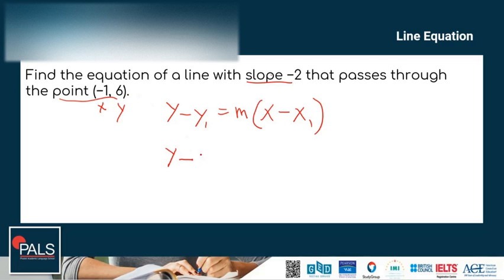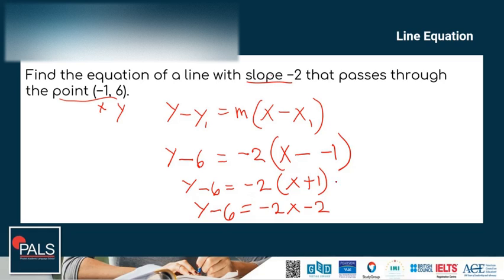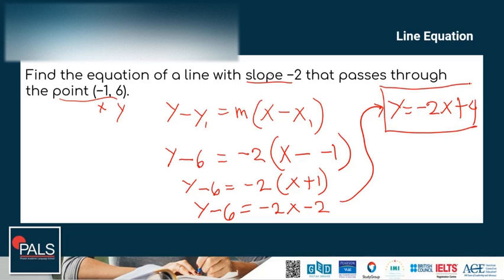Let's plug in the values: y minus 6 equals negative 2 times (x minus negative 1). Simplifying: y minus 6 equals negative 2 times (x plus 1), which gives y minus 6 equals negative 2x minus 2. Moving minus 6 to the other side, we get y equals negative 2x plus 4. This is the equation of the line with slope negative 2 passing through the point (−1, 6).